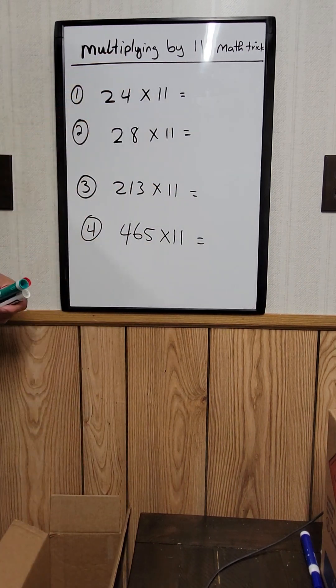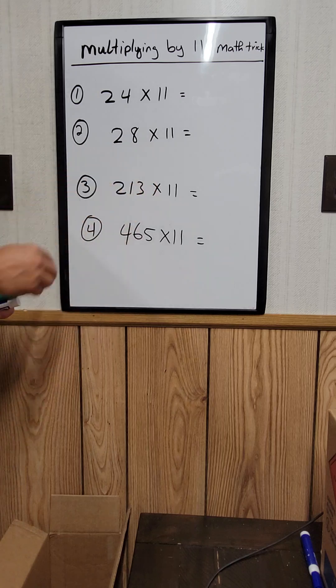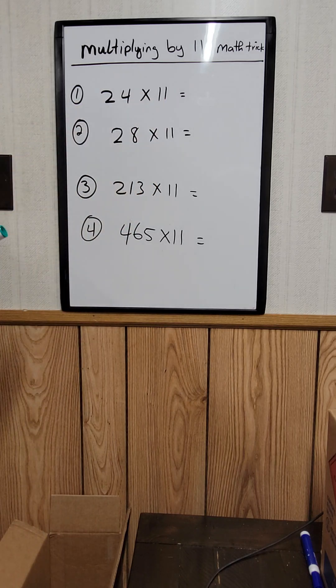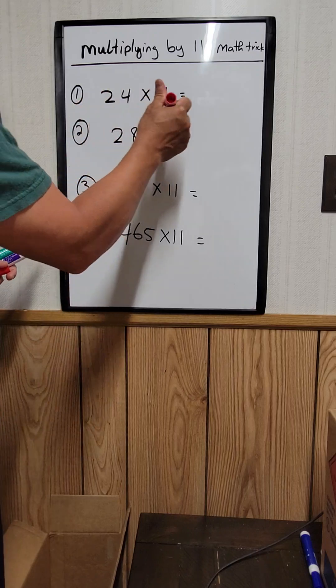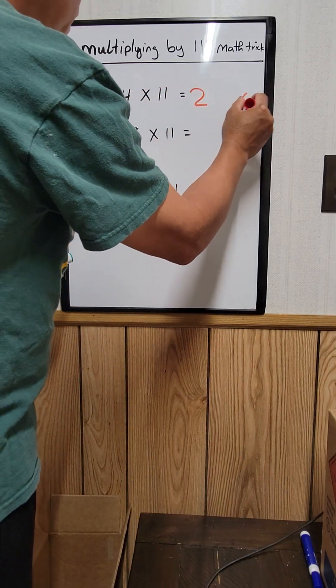I'm going to show you a little trick right here. Any time you multiply any number by 11, you can use this trick. For example, right here, 24 times 11.